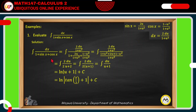From the given, we replace dx by 2 du over 1 plus u squared, 1 plus sine x where sine x is 2u over 1 plus u squared, plus cosine x where cosine x is 1 minus u squared over 1 plus u squared. Then we simplify the denominator by getting the LCD, which is 1 plus u squared.